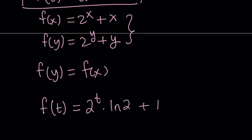Obviously, 2 to the power t for real values of t is not going to be negative. And ln 2, since 2 is greater than 1, this is also going to be positive. So, and adding 1 is just going to keep that. So, we have the situation where f prime of t is greater than 0 for all values of t.